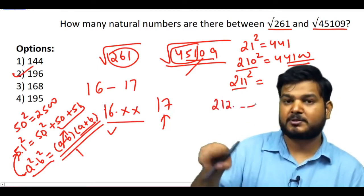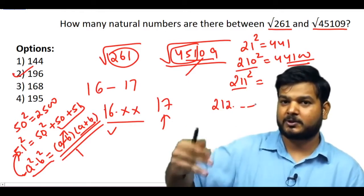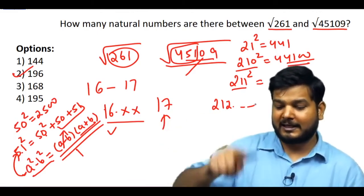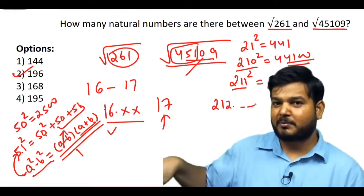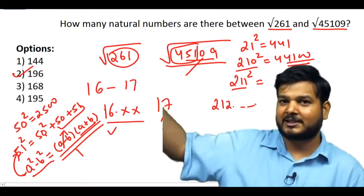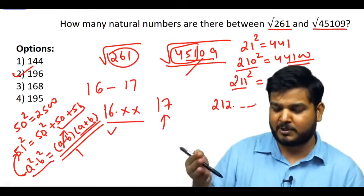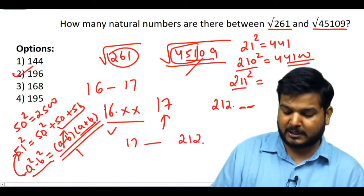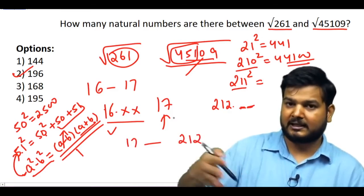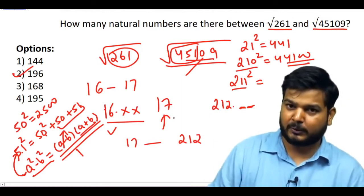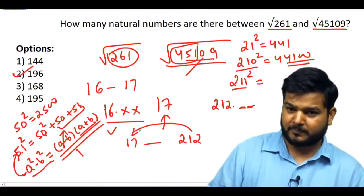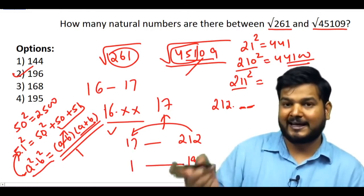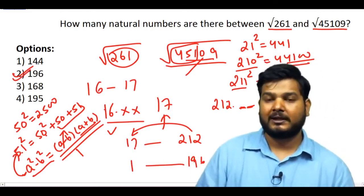So: from 210 to 211 adds ~400, from 211 to 212 adds another ~400 (total ~800), but the gap is 1009. Adding one more step (213) gives over 1200, which overshoots. So √45109 is 212.something. The count of natural numbers from 17 to 212 is 212 − 17 + 1 = 196.